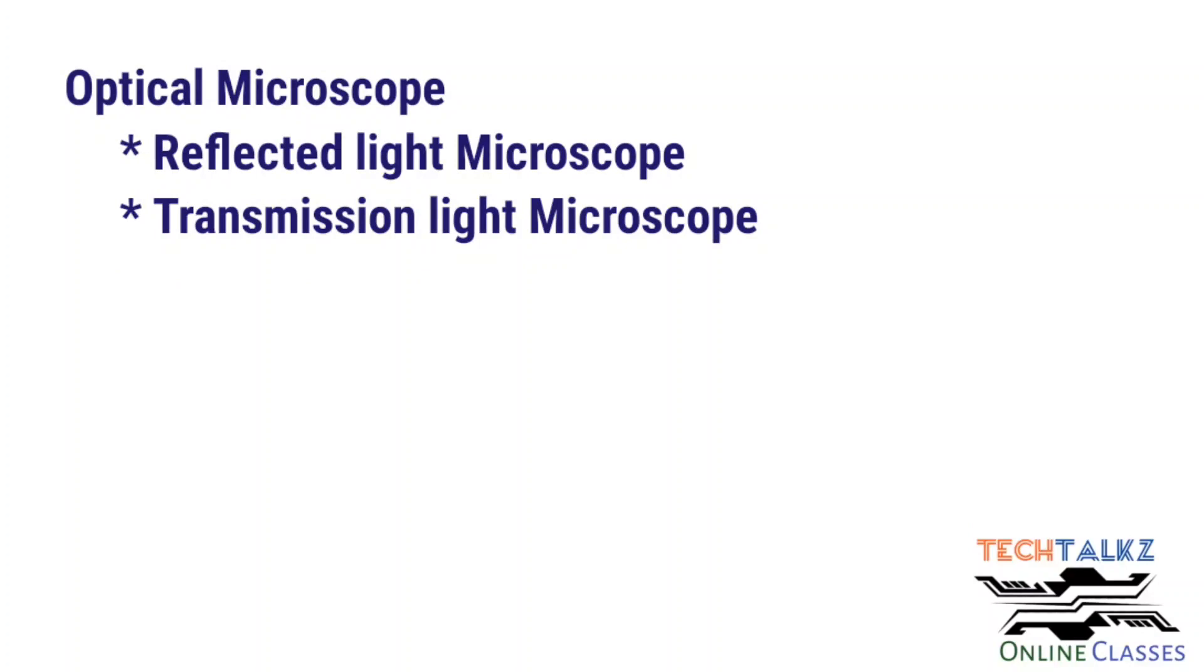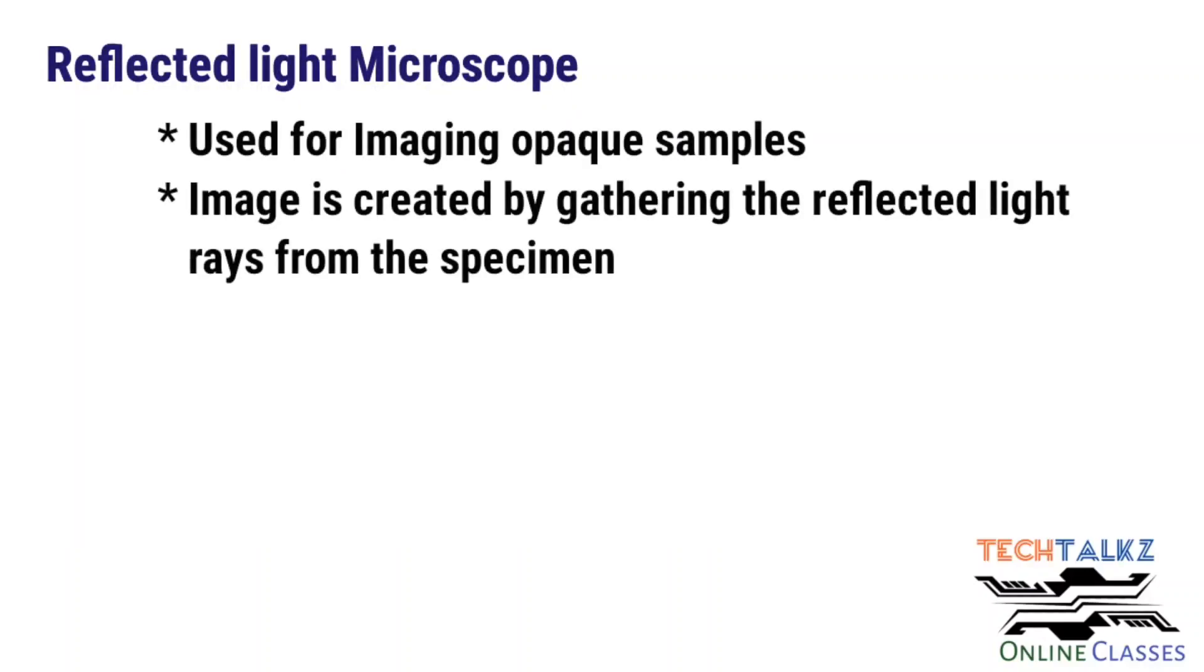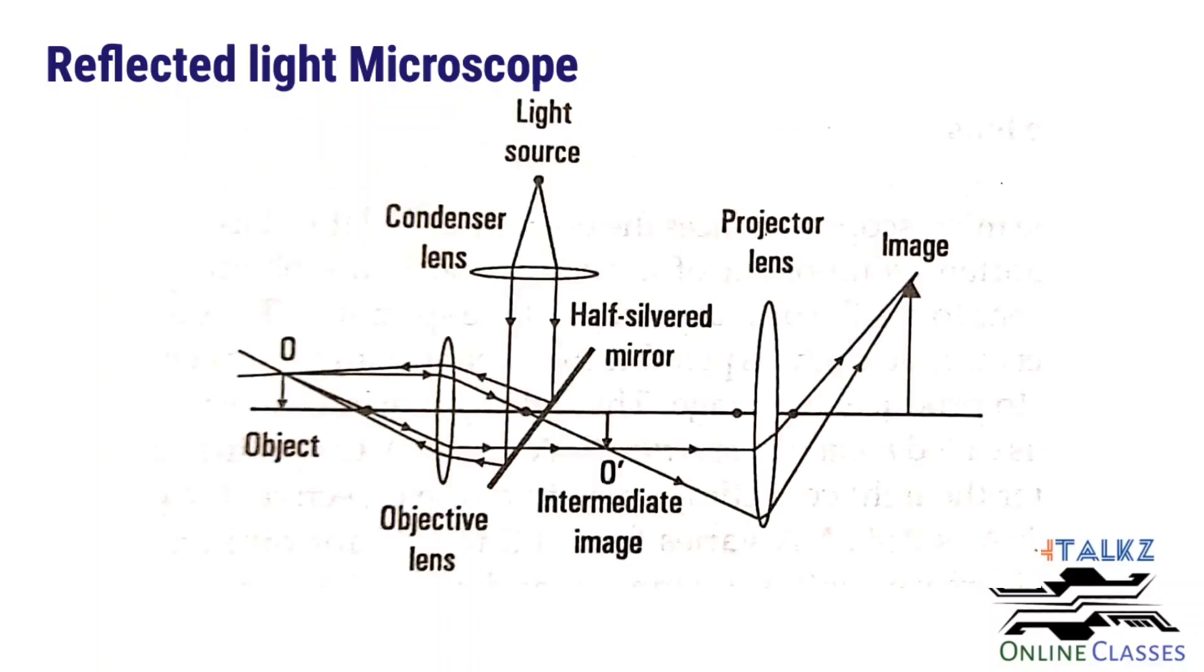Reflected microscope and transmission microscope. First, we can see the reflected light microscope. It is used for imaging opaque samples like metals. Here the image is created based on the gathering of reflected light rays. This is the schematic diagram.